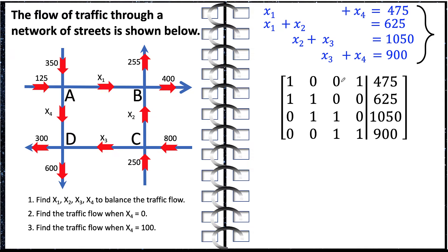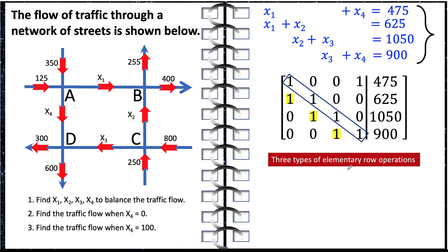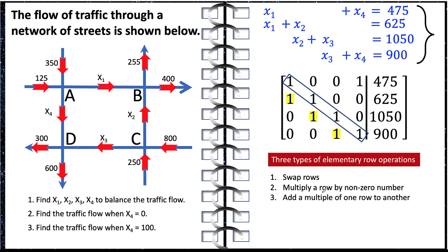When using this matrix to solve for the values of the variables, we want this downward diagonal to be all ones — and we have no problem because they are all ones. We want all the coefficients below this downward diagonal to become zero. We want all these ones in the lower triangle to become zero and the zeros to remain zero. We can achieve this using elementary row operations: we can swap rows, multiply a row by a non-zero number, or add a multiple of one row to another. Subtraction is covered here because subtraction is adding the additive inverse.